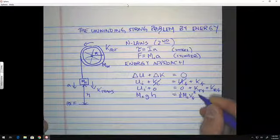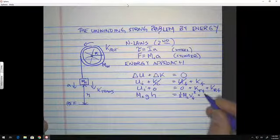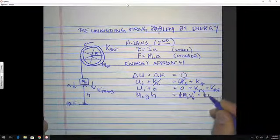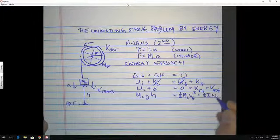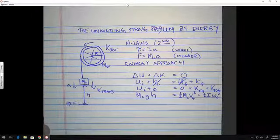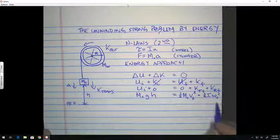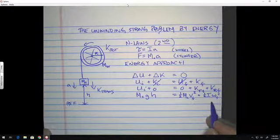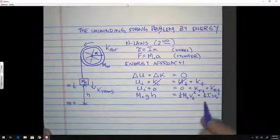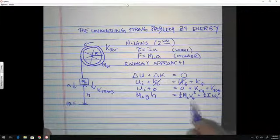And we also have a rotational energy from the wheel, which will be one-half times i times omega final squared. And this is the first time we've actually included this term in kinetic energy, but that's how you do it. Because now you've got two types of kinetic energy, one from the cylinder, one from the rotating wheel.